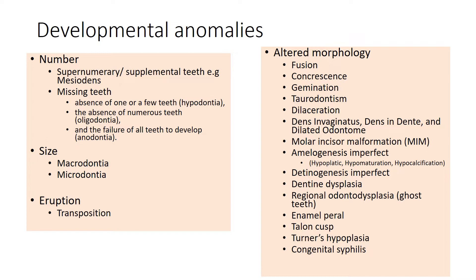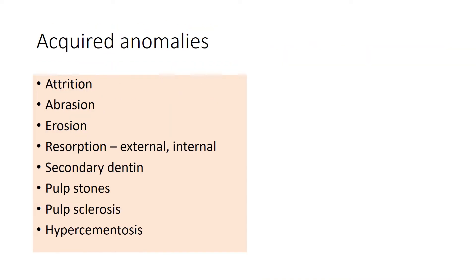When there are anomalies involving the size, it could be macrodontia or microdontia, and anomalies involving the eruption pattern of teeth, for example transposition. Under altered morphology there are various different types of anomalies which we will go through one after the other. Acquired anomalies include attrition, abrasion, erosion, resorption which could be external or internal, secondary dentine, pulp stones, pulp sclerosis, or hypercementosis.